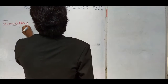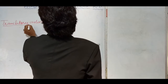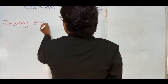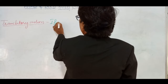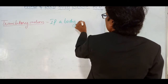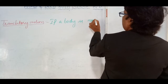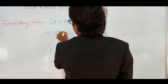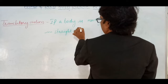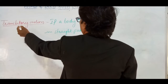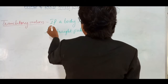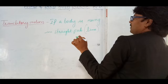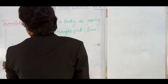First one is translatory motion. Let me write the definition. If a body is moving in a straight path, that is said to be in translatory motion. If a body is moving in a straight line, okay. Again this motion is in two types.